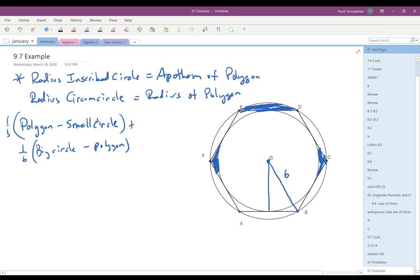Well, the polygon is going to be one-half AP. And so one-half times the apothem times the perimeter, which I don't know. I need the area of the small circle. So I'm going to need the radius of the small circle, which is also going to be the apothem. And so it's pi r squared. So that squared times pi.